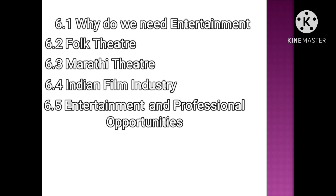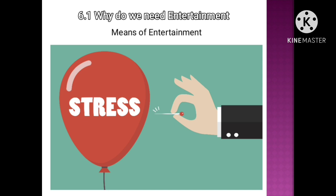The chapter covers five points: first, why do we need entertainment; second, folk theater; third, Marathi theater; fourth, Indian film industry; and fifth, entertainment and professional opportunities. Starting with the first point: entertainment keeps our mind lively and fresh. Games and hobbies make a person physically more energetic, and pursuing them helps in development of personality.